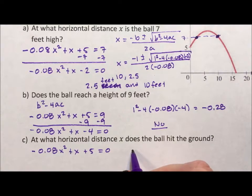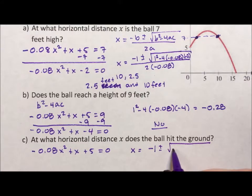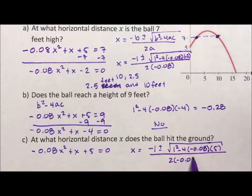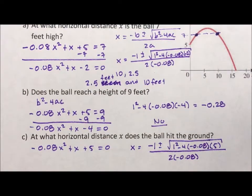I'm going to say x equals negative b plus or minus the square root of b squared minus 4ac all over 2a. And when I put this into my calculator, I'm going to get the answers x equals negative 3.8 and 16.3 feet.